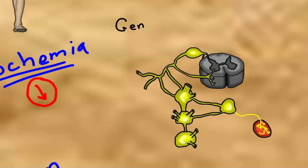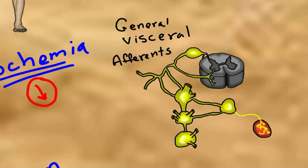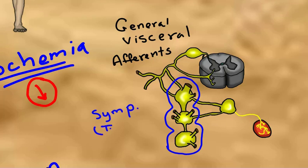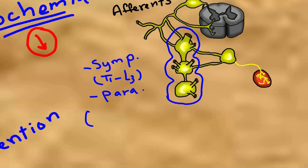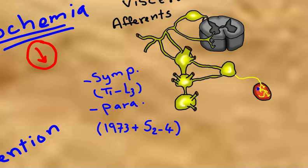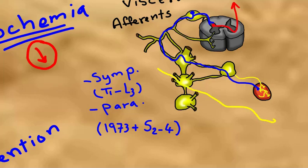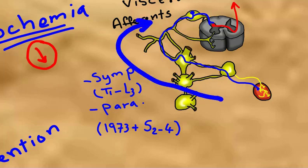Visceral pain afferents are called general visceral afferents. They are not regarded as sympathetic or parasympathetic fibers, yet these afferents pass by the autonomic ganglia — from T1 to L3 with the sympathetic ganglia, and with the 7th, 9th, and 10th cranial nerve ganglia, plus the 2nd to 4th sacral autonomic nerves. The general visceral afferents then separate from the autonomic fiber pathway, having their nuclei on the dorsal root ganglia before synapsing with the second-order neuron in the spinal cord.